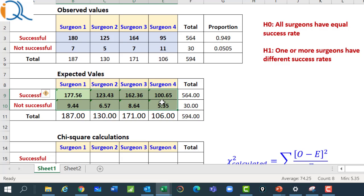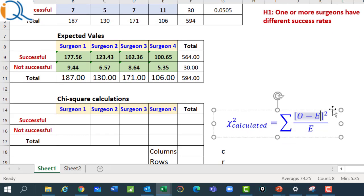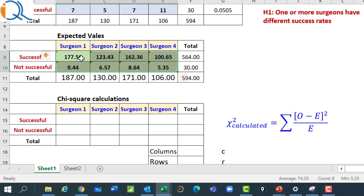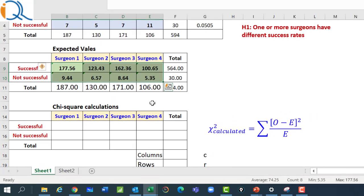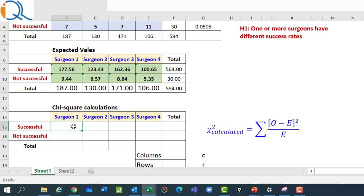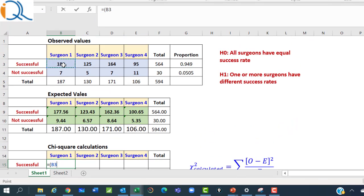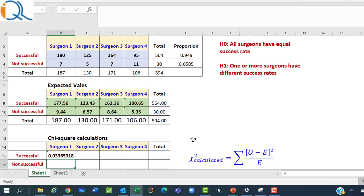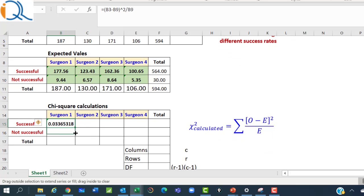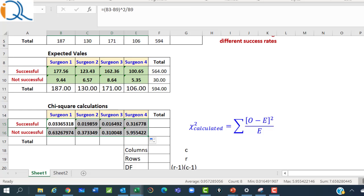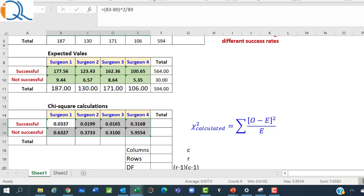Having done the calculations of the expected values of the successful operations, now we have to use the chi-square calculation formula and that is summation of observed value minus expected value bracket square divided by expected. This term is to be calculated for all eight observed and expected values. So, I make a table of chi-square values in the lower table. So, that's now easy. It's equal to observed minus corresponding expected bracket square and divided by expected that is 177.5. So, the first chi-square observed value is 0.033. I can copy this value everywhere and I can round it off to maybe three decimals or four decimals.